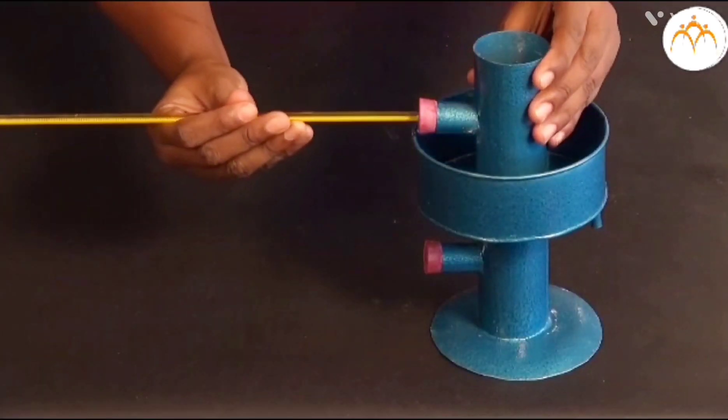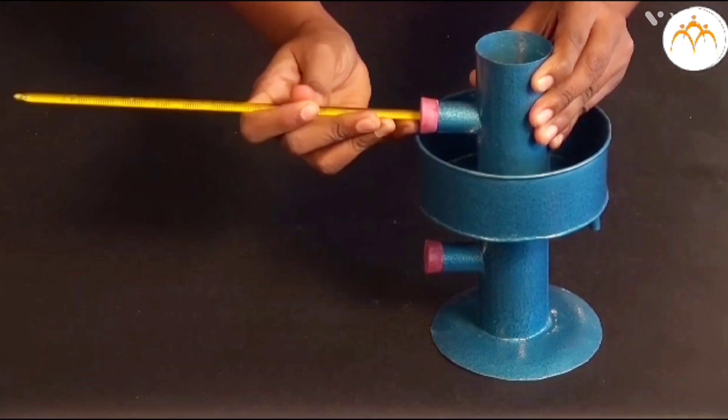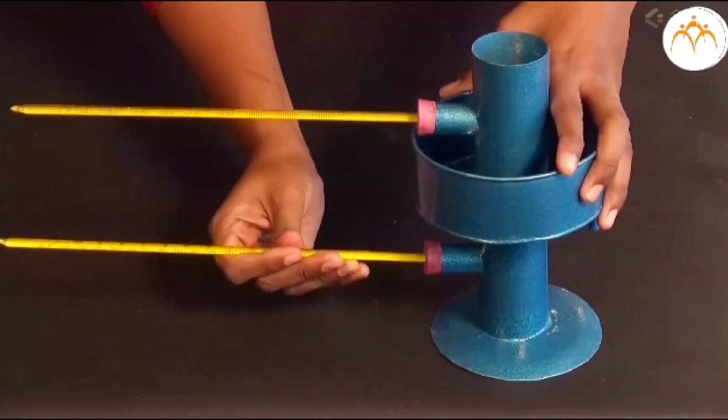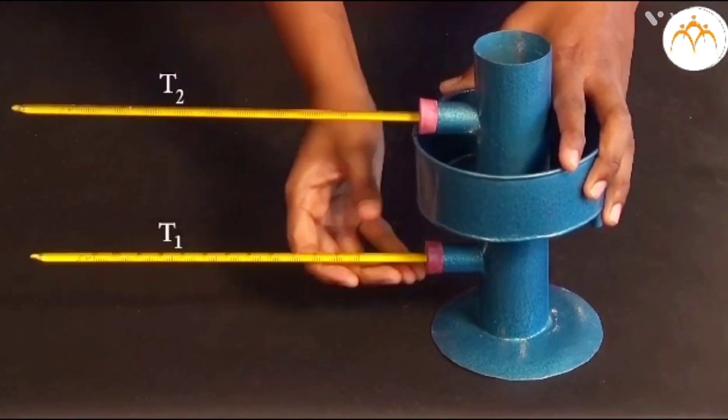In procedure, we take the Hobbes apparatus and fix two thermometers, T1 the lower one and T2 as the upper parts.